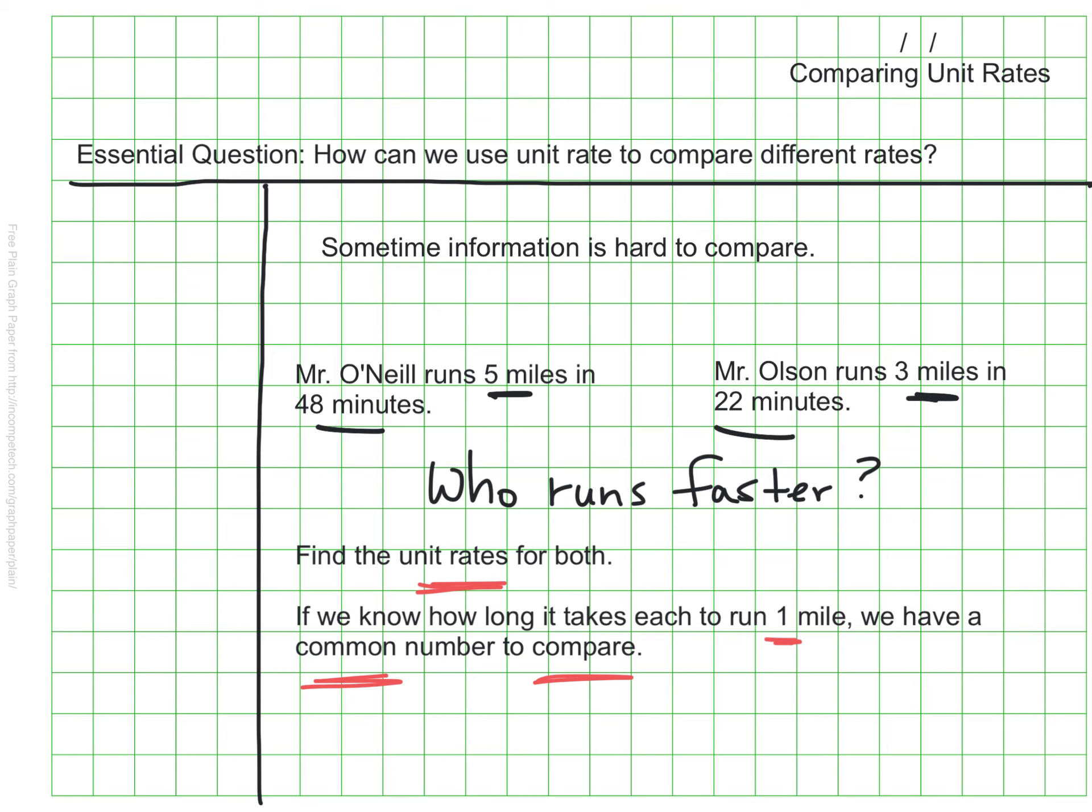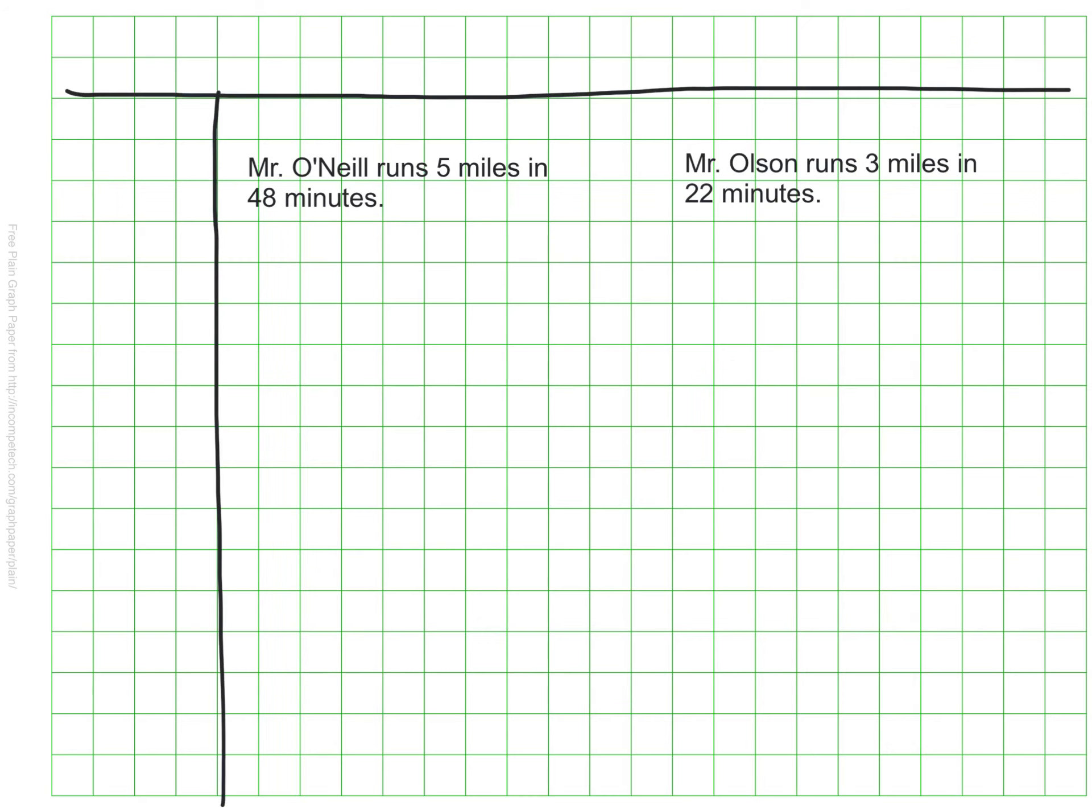One way to determine who is the faster runner is to find the unit rates for both of our teachers. If we can find how long it takes each of them to run one mile, then we have a common number that we can compare. Let's start by finding the unit rate for Mr. O'Neill. I'm going to use equivalent ratios that are set up as fractions to do that.